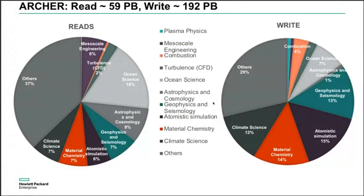This slide shows a pie chart of both reads and writes on Archer over this period. Over 30 months, Archer compute nodes read close to 59 petabytes of data and wrote close to 192 petabytes — this is just from the compute nodes, not including data movement across RDF. On average, for every byte read, people write about three bytes. There is a big 'others' chunk in reads and writes, showing the huge variety of applications that Archer runs.